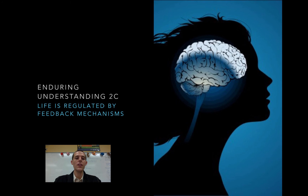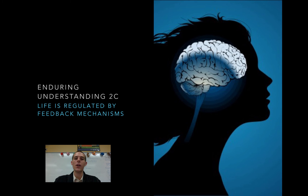Then we're going to go to 2C, which is that life is regulated by feedback mechanisms. So, if our living systems have got boundaries, if they are obtaining the energy they need, if they are responding to disturbances, they also need to be able to regulate their internal environments.